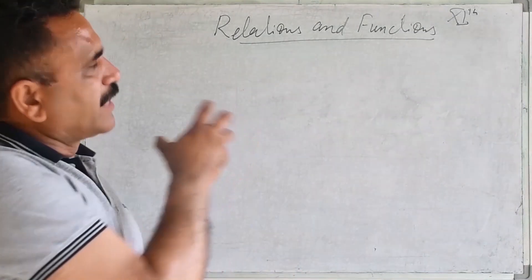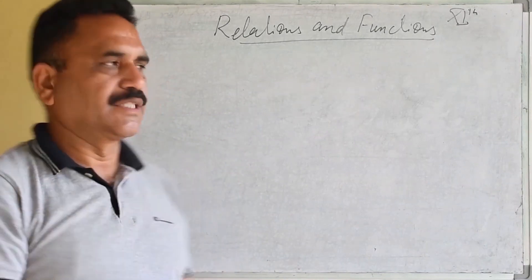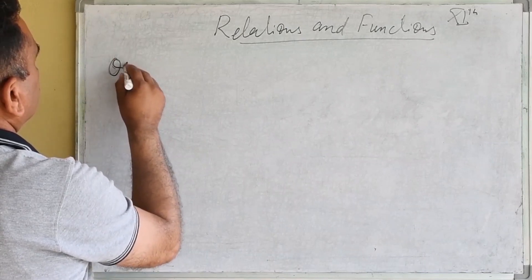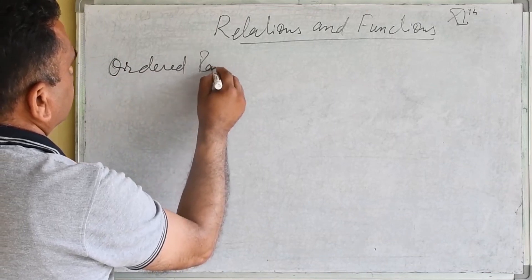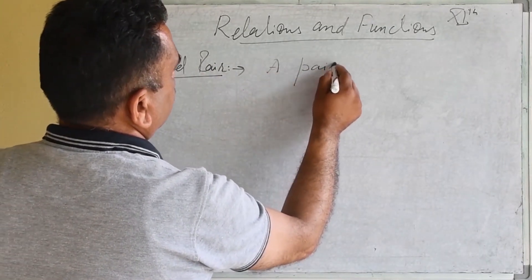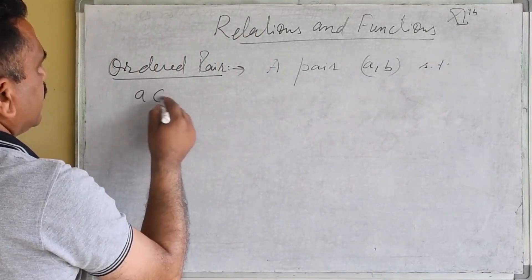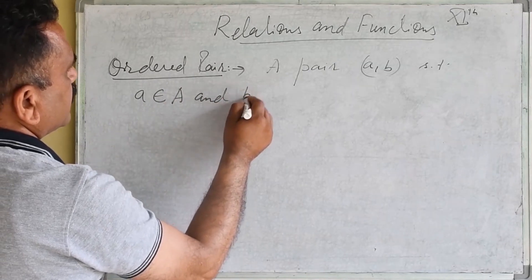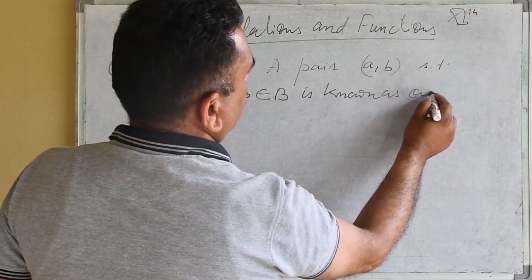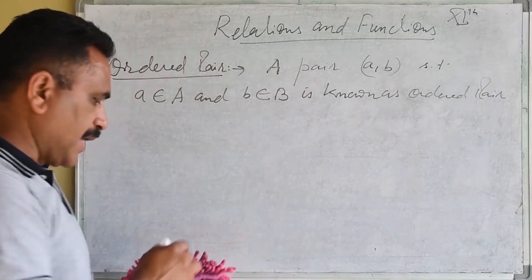Before the definition of relations, we must know what is an ordered pair and what is the Cartesian product of two sets. We are well aware about sets. An ordered pair AB such that A belongs to set A and B belongs to set B is known as an ordered pair, where A and B are non-empty sets.